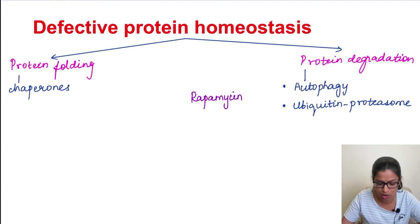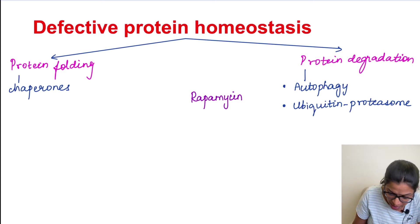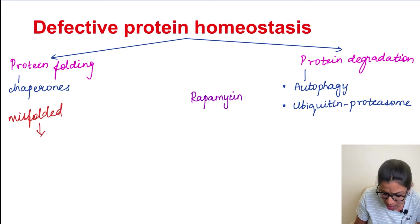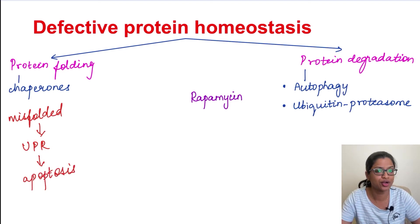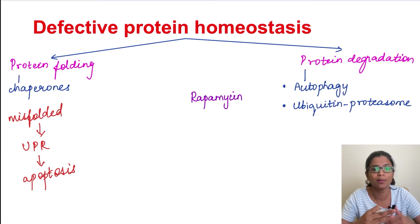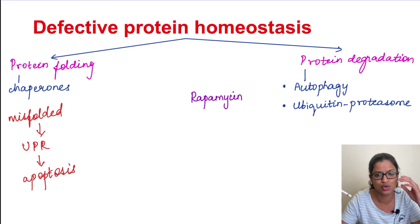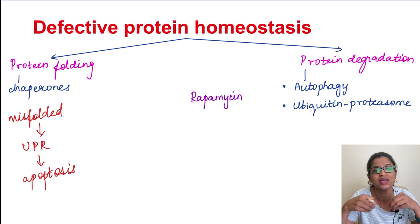Moving on to the third mechanism: defective protein homeostasis. Normally, proteins are folded by the help of chaperones. If they are not folded properly — that is, when they are misfolded — it will lead to an unfolded protein response that will trigger cell death by apoptosis. So this protein folding is going to be defective, resulting in apoptosis-type cell death. There is also impaired protein degradation. When misfolded proteins cannot be folded properly, they have to undergo protein degradation by either autophagy or the ubiquitin-proteasome pathway. If there is impaired autophagy, misfolded proteins accumulate and cause stress to the cell, and the cell is going to die or undergo aging.